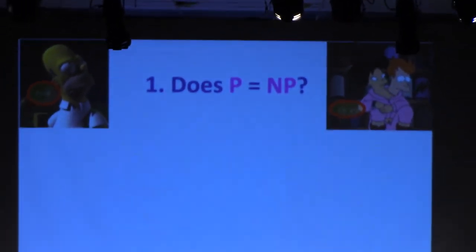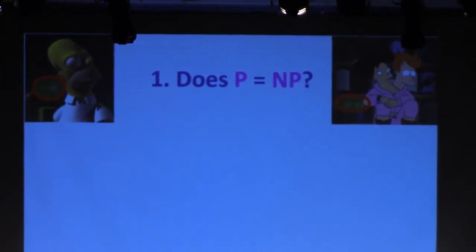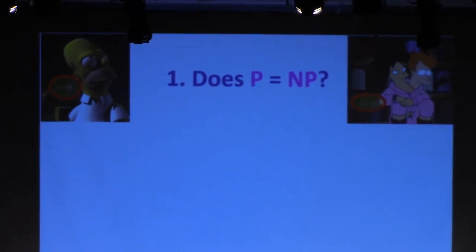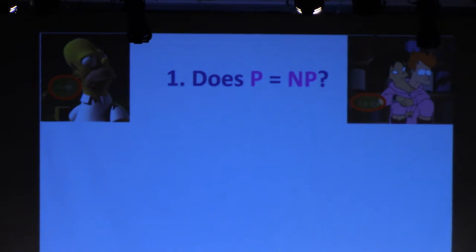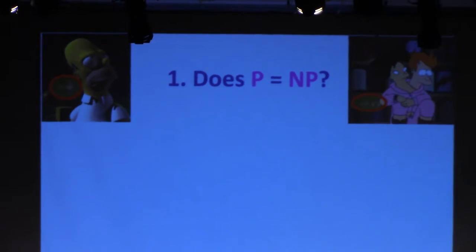My own belief is that P is not equal to NP. I like to say that if we were physicists rather than computer scientists and mathematicians, we would have just declared that to be a law of nature and given ourselves Nobel Prizes for the discovery. If later it turned out that P equals NP, we would just give ourselves more Nobel Prizes for the law's overthrow. In an interdisciplinary subject like quantum information, you learn that what physicists call laws, we tend to call conjectures.